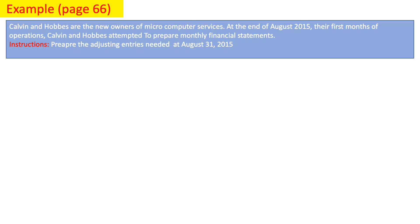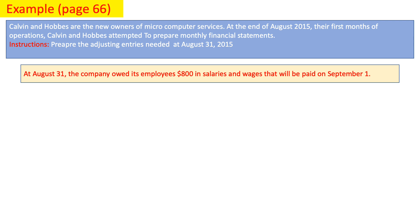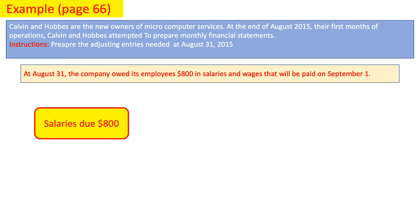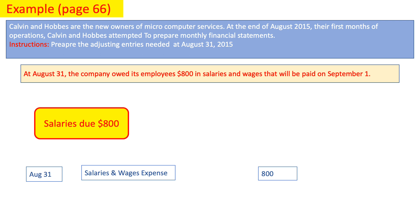Let's take an example. Calvin and Hobbes are the new owners of Microcomputer Services. At the end of August 2015, their first month of operation, they attempted to prepare monthly financial statements. Prepare the adjusting entries needed at August 31, 2015. At August 31, the company owed its employees $800 in salaries and wages that will be paid on September 1. We need to record this expense even though we did not pay for it yet. So on August 31, we debit salaries and wages expense for $800 and credit salaries and wages payable for $800.